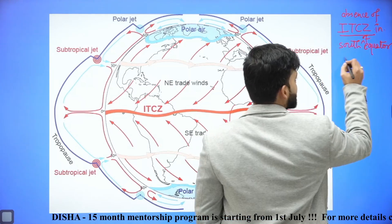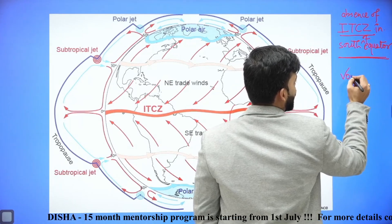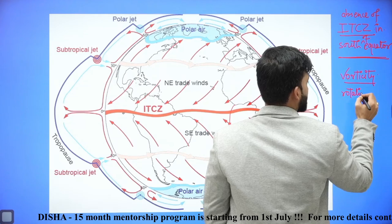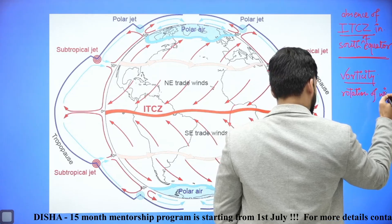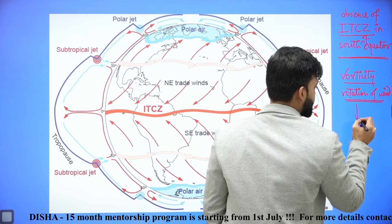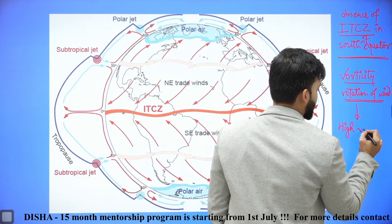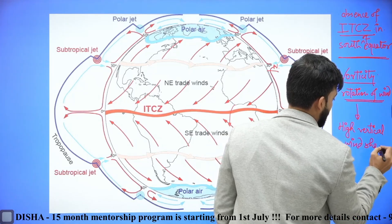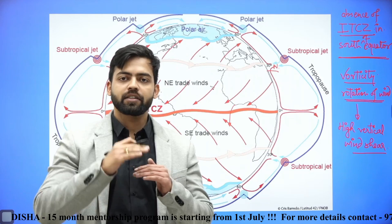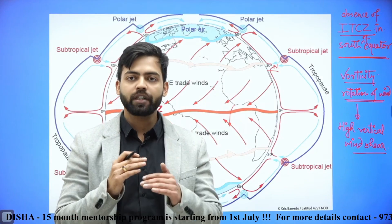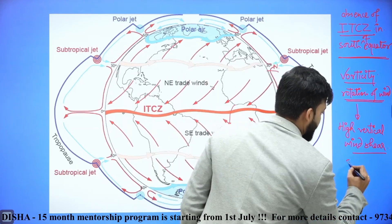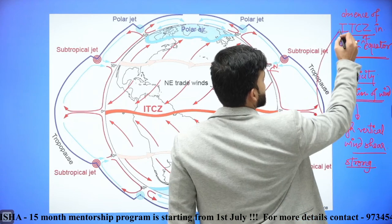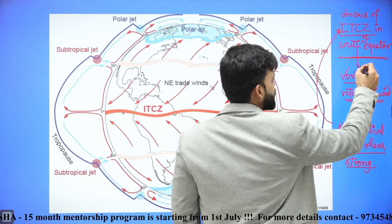Because of this absence of ITCZ, the vorticity of wind — that is, the rotation of wind — is absent. Rotation of wind is absent because there is high vertical wind shear in the southern hemisphere. Vertical wind shear means that as altitude changes, the speed or velocity of the wind changes rapidly. This wind shear is very strong in the southern hemisphere, which causes the absence of ITCZ and, consequently, the absence of vorticity.